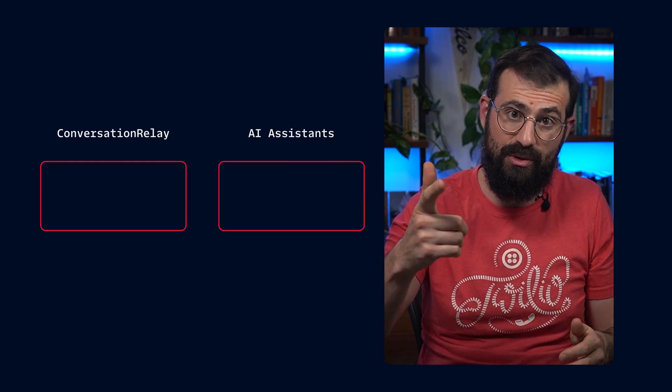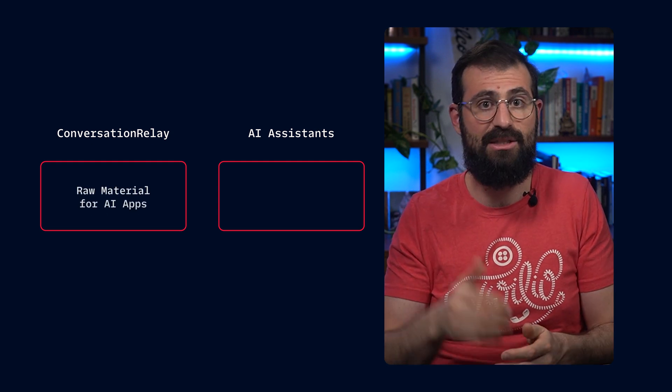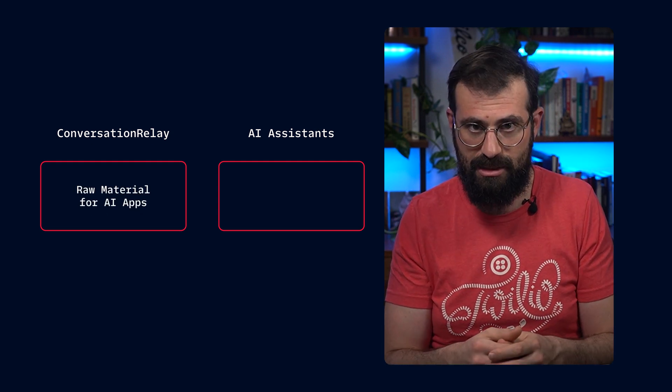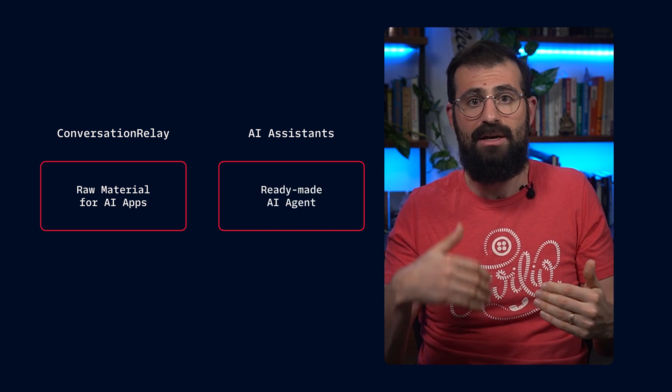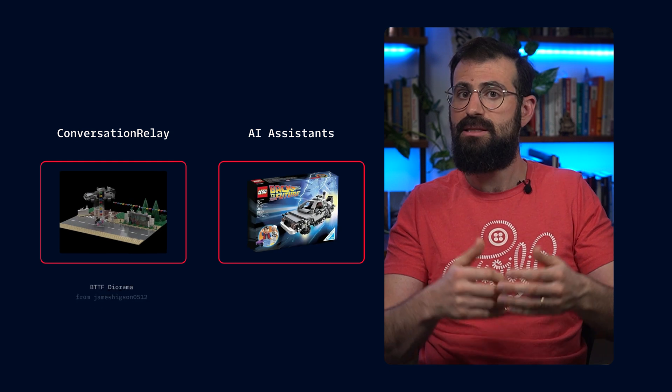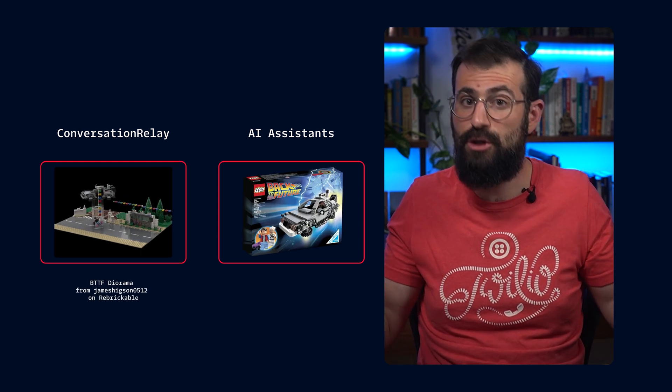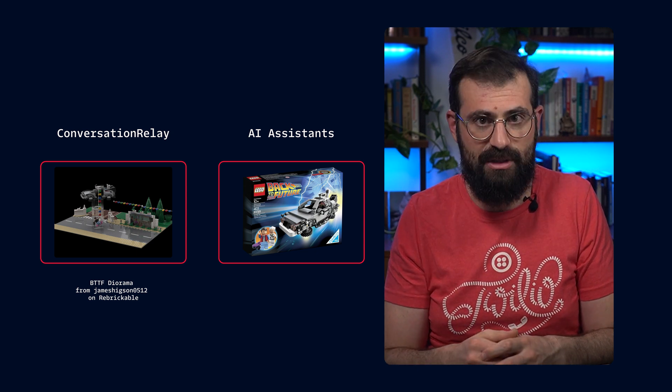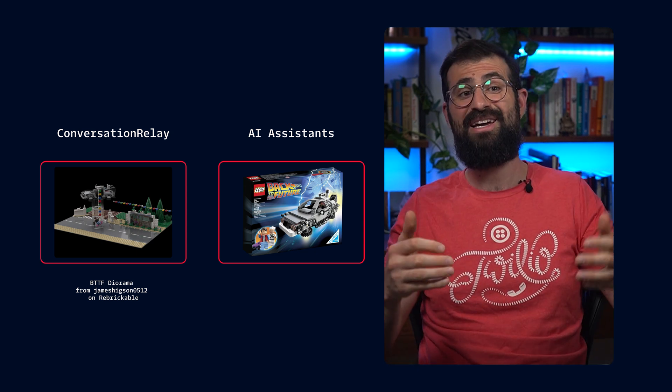One of my favorite demos was written by new Twilion Noah Mogul. He built a modular tool for deploying a Twilio AI assistant with pre-configured tools and knowledge bases. His project provides a structured way to create and configure an AI assistant for retail customer care. So then, what's the difference between Conversation Relay and AI Assistants? Which one should you use? Think of Conversation Relay as the raw material for building AI-powered voice applications, while AI Assistants provides a ready-made AI agent that you can start using right away. It's the difference between building a DeLorean time machine with an official Lego set versus building a Lego diorama of your favorite scene from Back to the Future 2. Either way, we're all nerds.